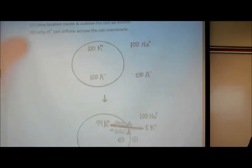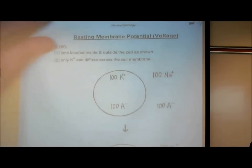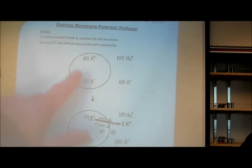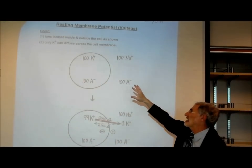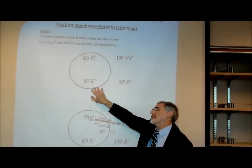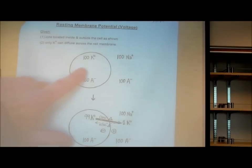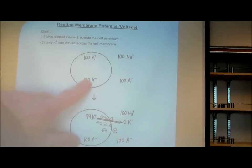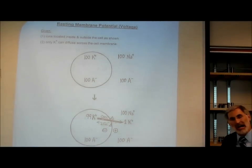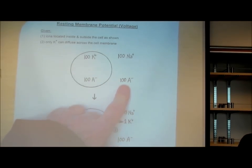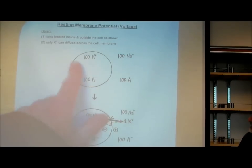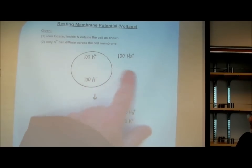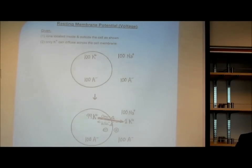Let's imagine we had a cell that started out with 100 positive charged potassiums on the inside and 100 negative charged chemicals also on the inside — mostly protein. If there are 100 positive charges and 100 negative charges inside, it's electrically neutral. On the outside, let's say there are 100 positive charged sodiums and 100 negative charges — probably chloride. That's electrically neutral too. So initially there's no difference in electrical polarity between inside and outside.